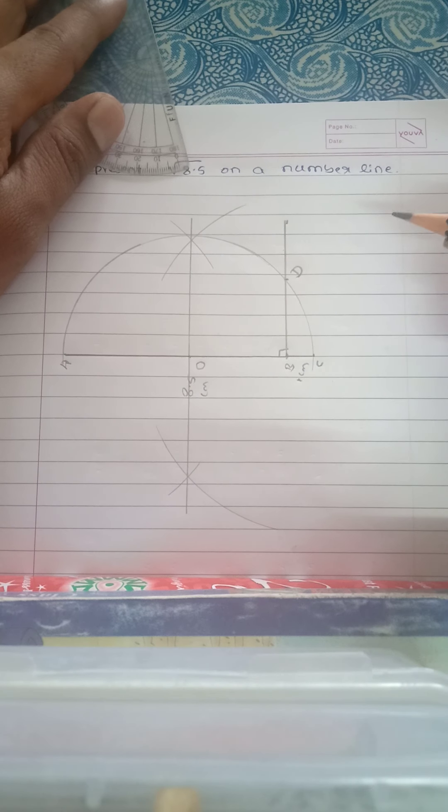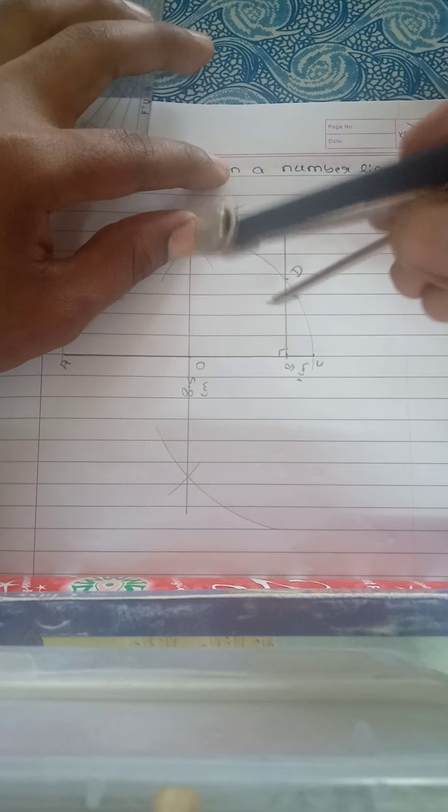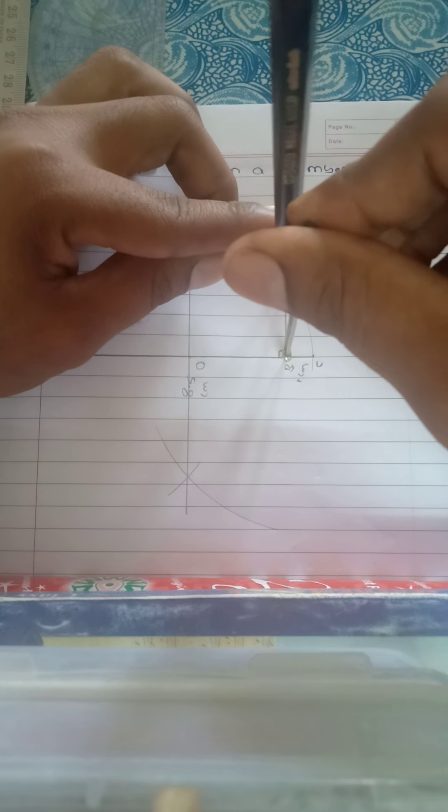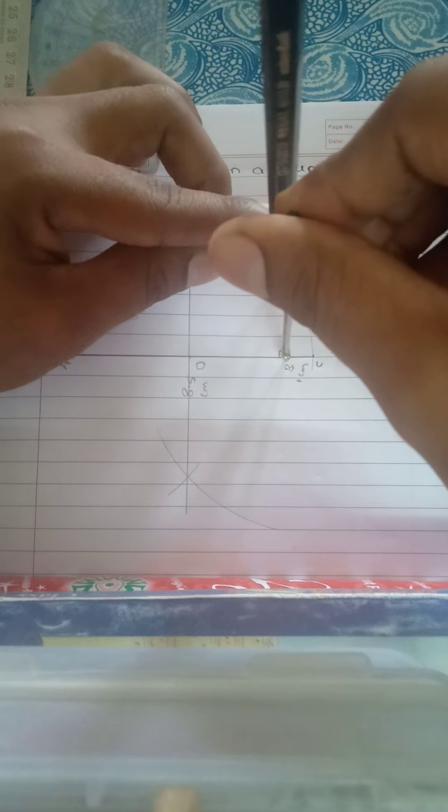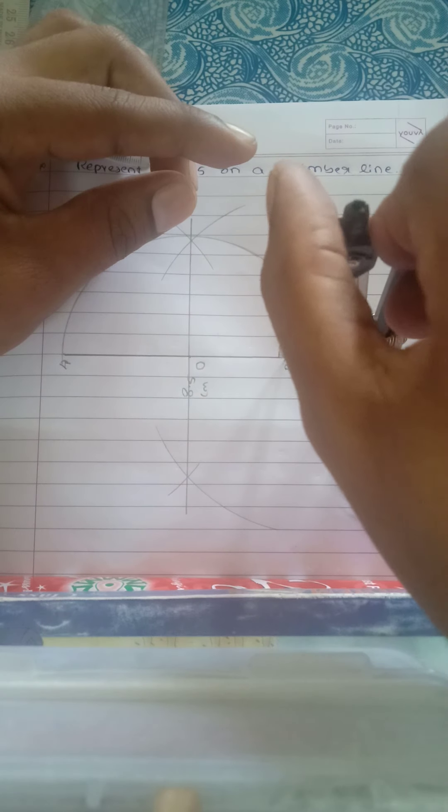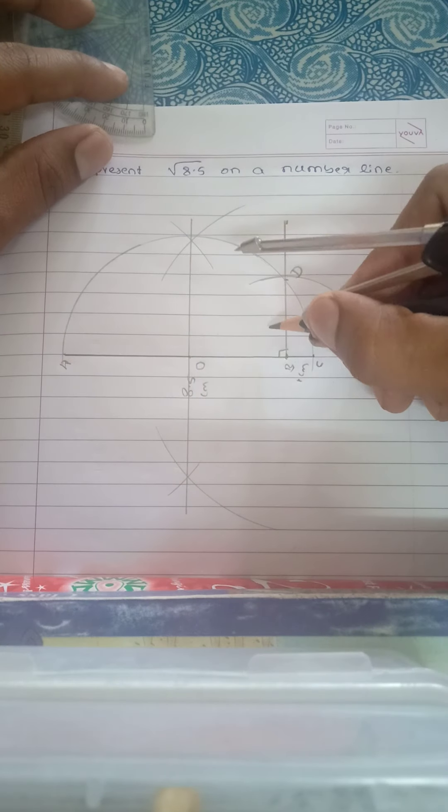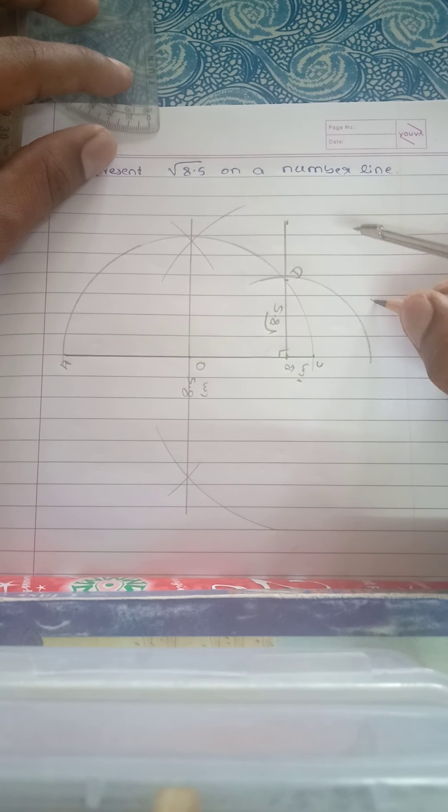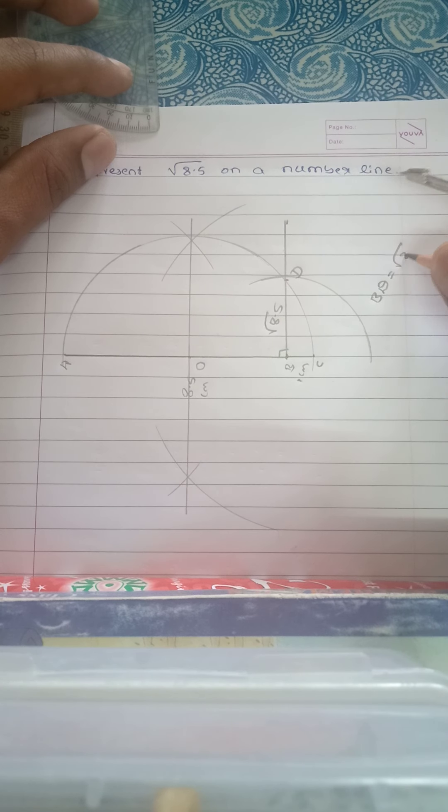Take the compass width of BD, how much it is there, so you should draw one arc. This arc represents the root of 8.5. So here I will write BD is equal to root 8.5.